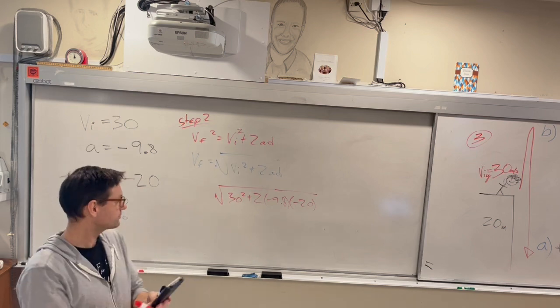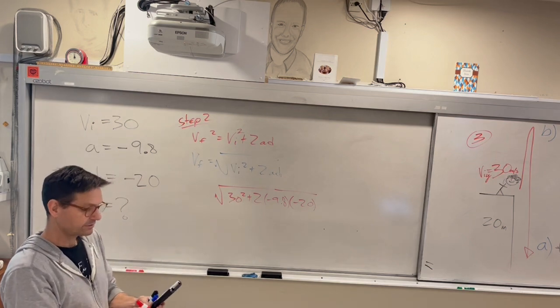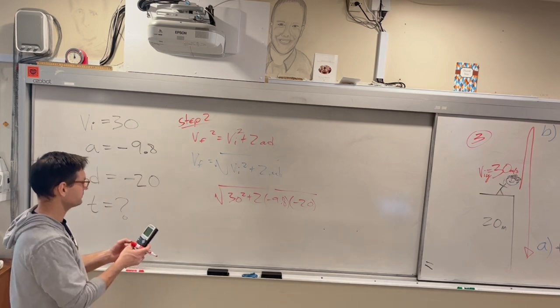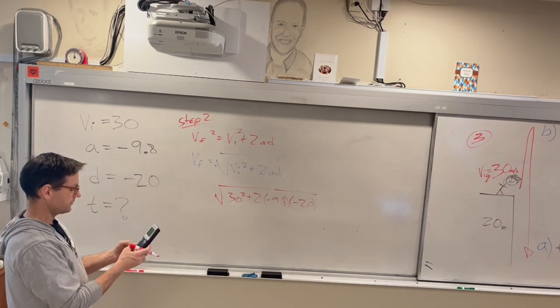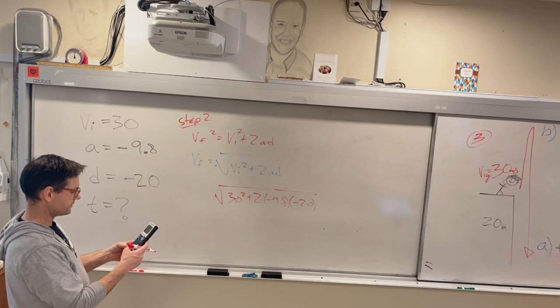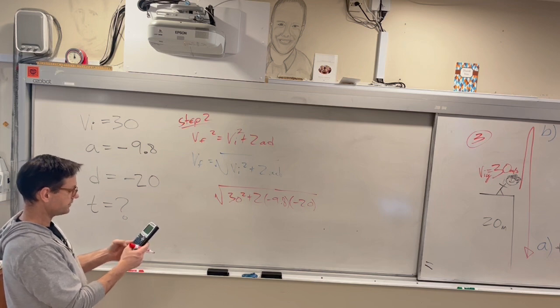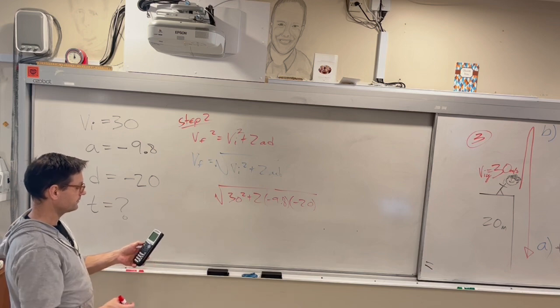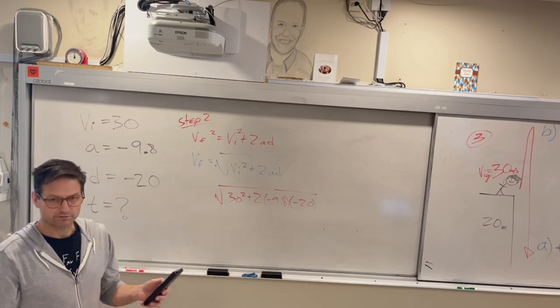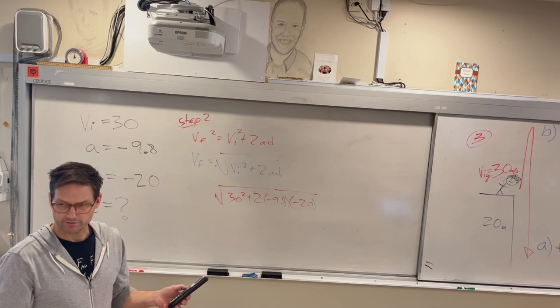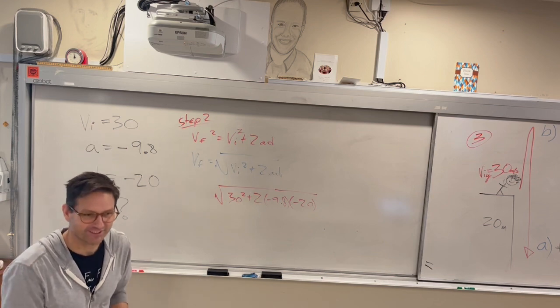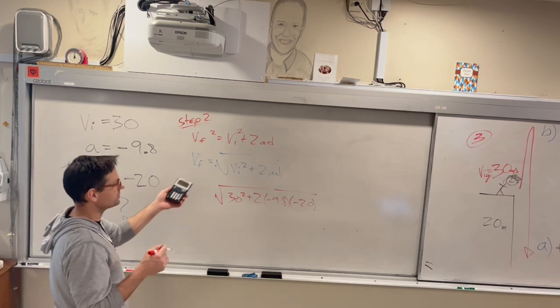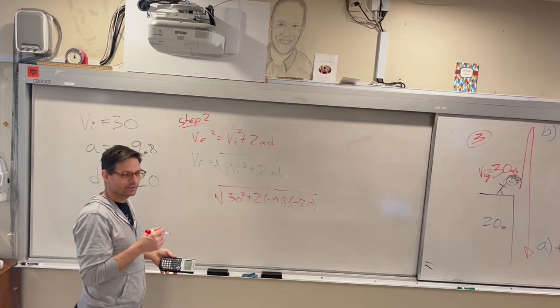What is it? 25 to 625. Let's find out. 30 squared plus 2 times negative 9.8 times negative 20. I got 35.9. Is that correct? Oh, you did the whole thing. Did you do the quadratic? Okay.